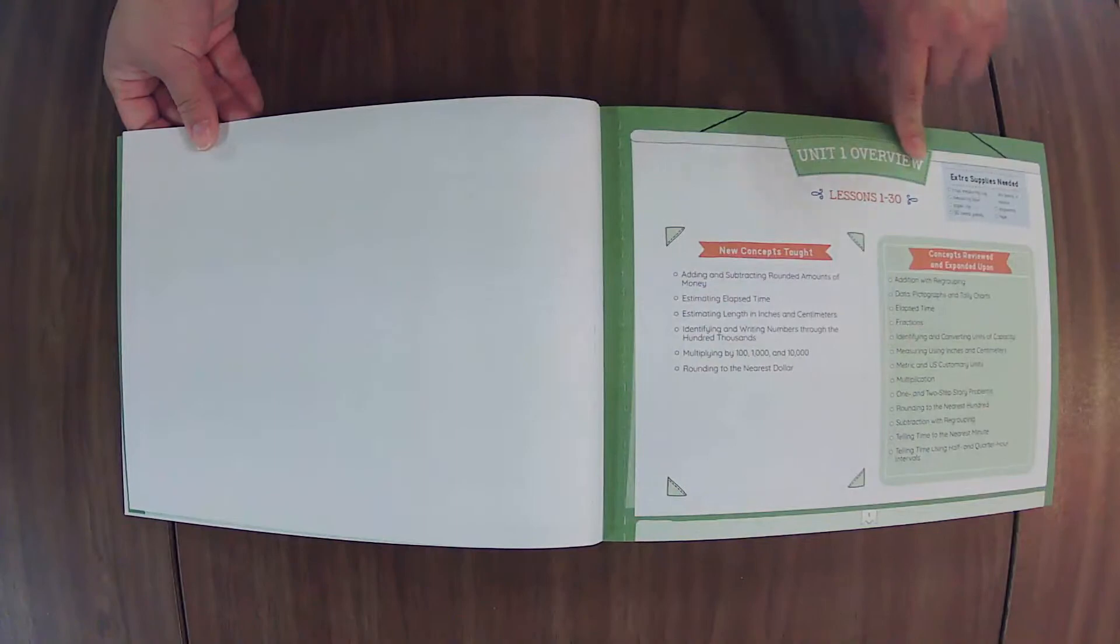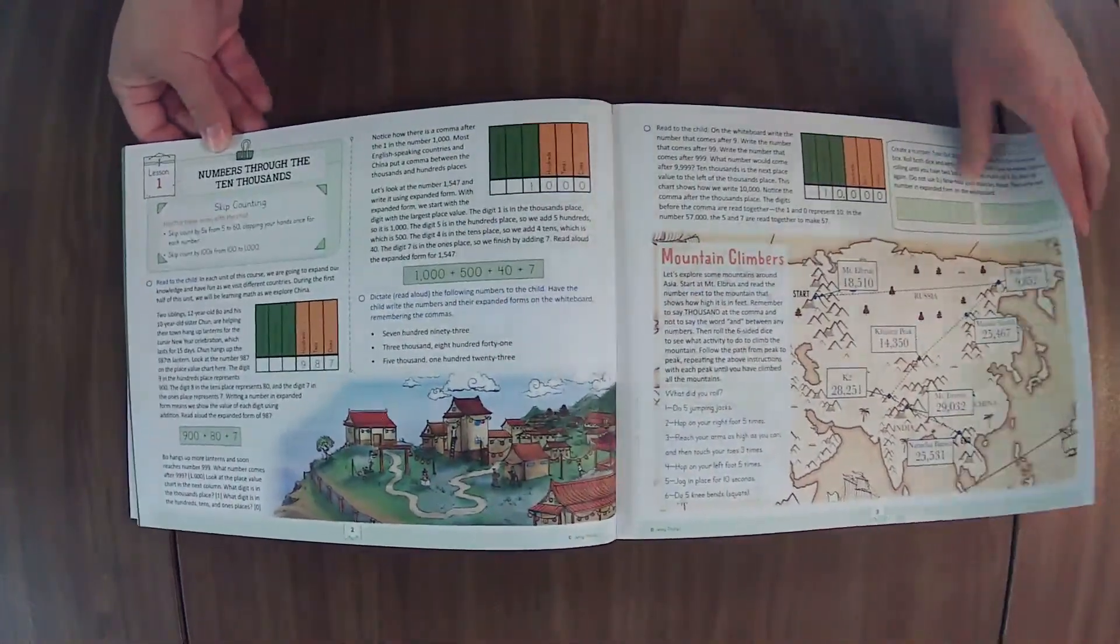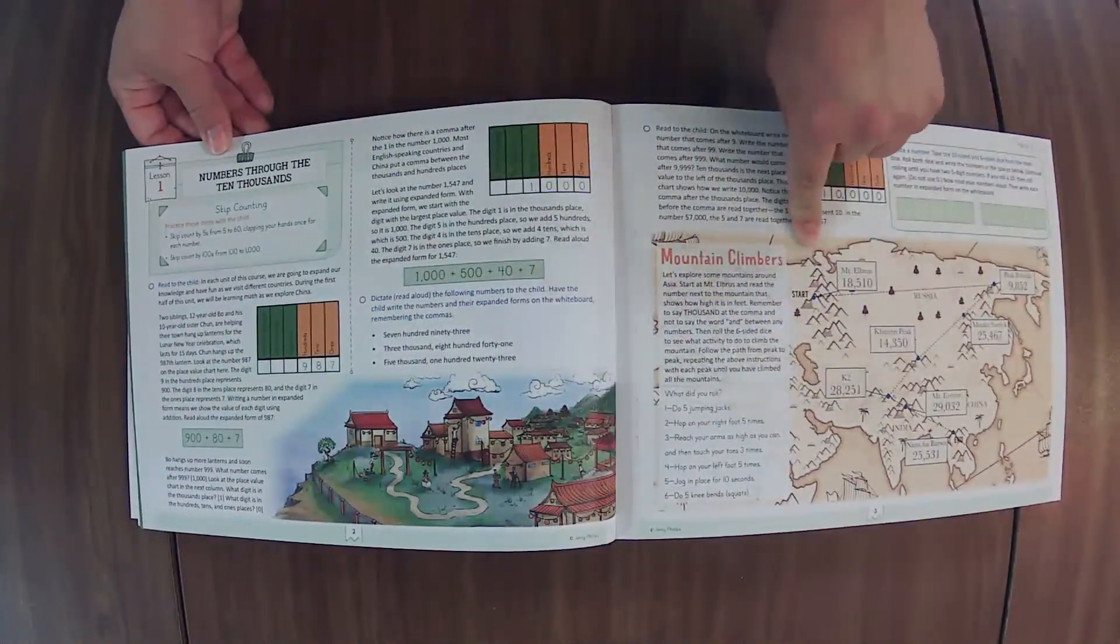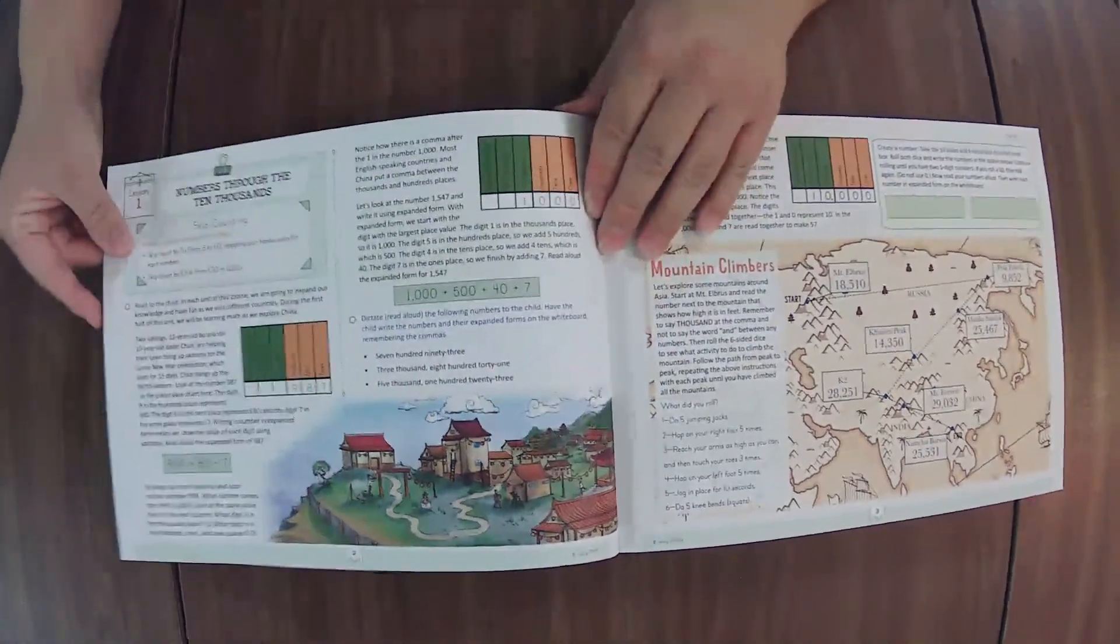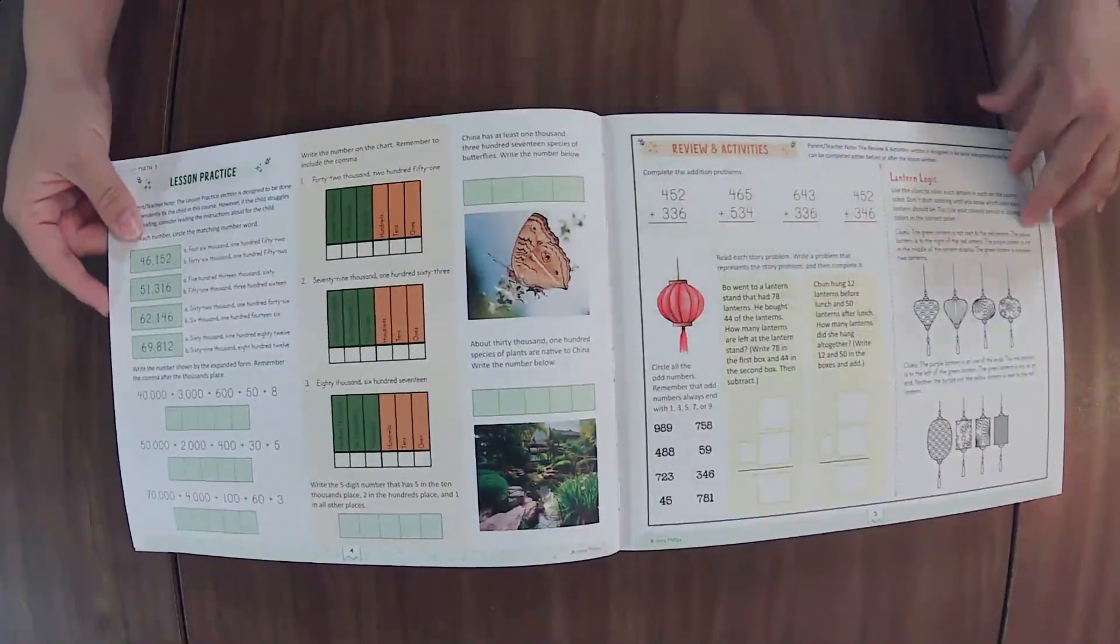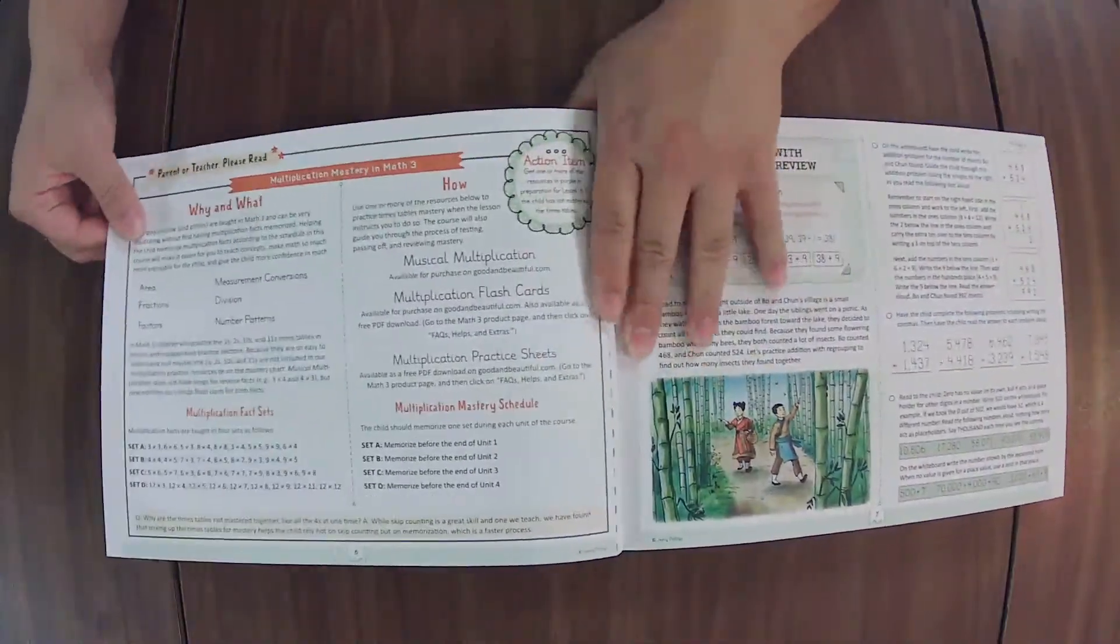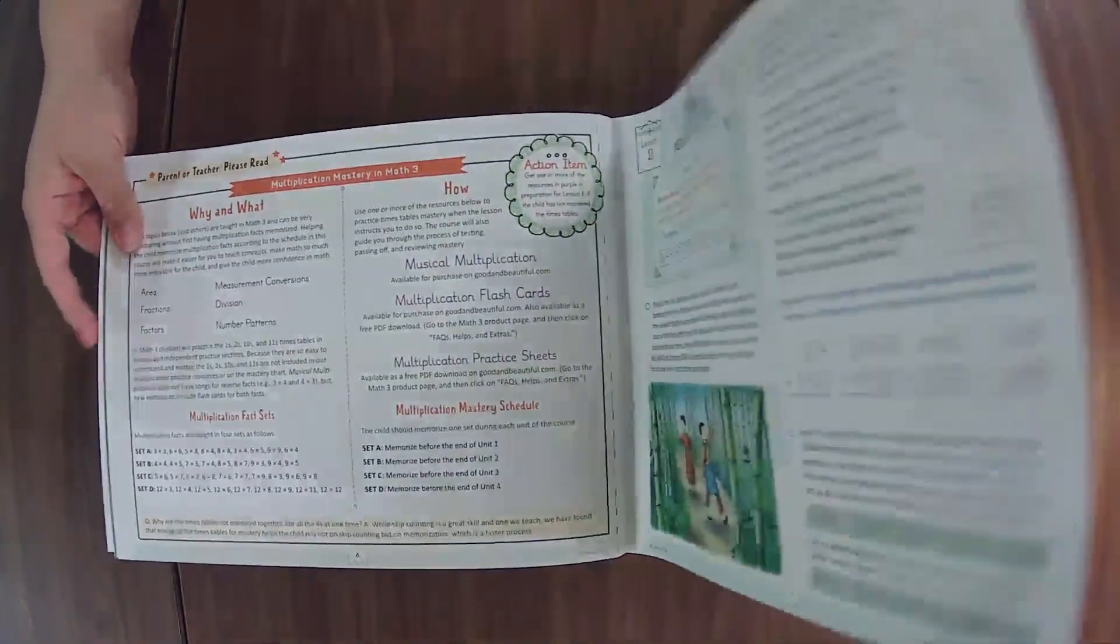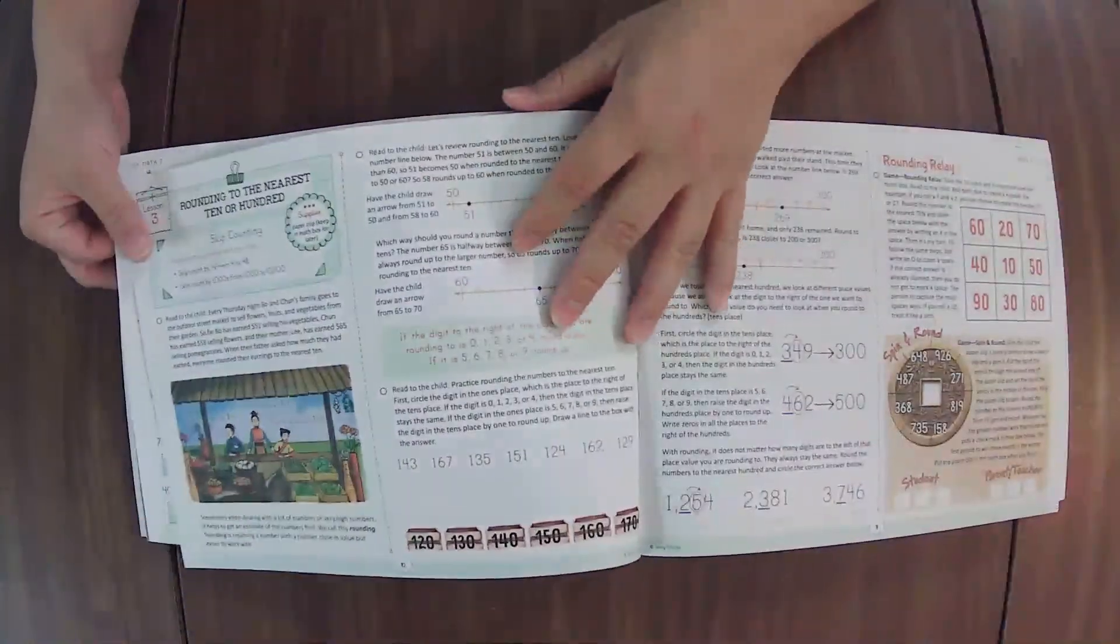I have listed out in the description box each of the new concepts taught in the units for you. This unit covers lessons 1 through 30, and in this course you also get to cover geography, which is really cool. That also happens in Level 4. In Level 2 they're covering cultures, and this is a little more advanced, focusing on the geography of the place as well, which I have enjoyed with my kiddo in Level 4.